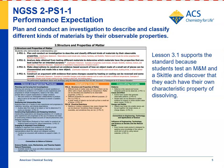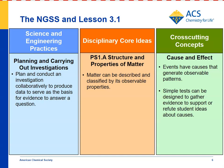For NGSS Standard 2-PS1-1 — plan and conduct an investigation to describe and classify different kinds of materials by their observable properties — Lesson 3.1 supports that standard because students look at different materials, an M&M and a Skittle. The observable properties are that the outside of both candies dissolve similarly, but the inside dissolves differently. For science and engineering practices — planning and carrying out investigations — students help plan an investigation to compare the dissolving of an M&M and a Skittle, and their data is the size difference between them after dissolving.